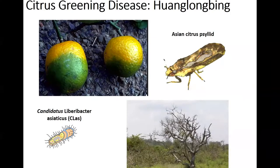Citrus greening disease, or Huanglongbing, is a fatal disease of citrus, and it causes citrus fruits to ripen unevenly and taste salty and bitter. In the United States, it's caused by the gram-negative bacterium called Candidatus Liberibacter asiaticus, and I'm going to be calling that CLAS. CLAS can be transmitted between citrus hosts by an insect called the Asian citrus psyllid, which you'll see here. This transmission relationship is complex, but it really begins with the ability of the psyllid to feed on citrus plants, and that's what I'll focus on today.